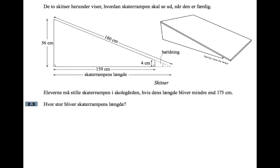The two sketches below show how the skater ramp should look when it's finished. And then the question is asking what will the skater ramp's length be, and that's on the diagram. So it's basically a missing side in a right-angled triangle. You've got 180 centimeters, you've got 56 centimeters, and you're missing the third side of that right-angled triangle. So this is a Pythagoras problem. It's nothing to do with angles, it's Pythagoras.